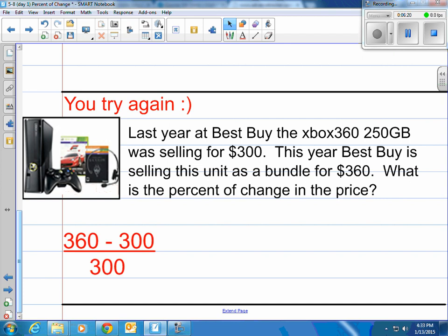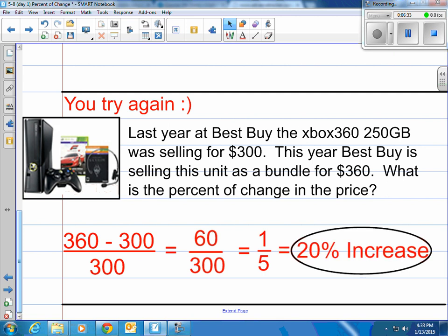So what do we start out with? We take 360 and subtract the 300, which gives us 60 over 300. And 60 over 300 is one-fifth. And one-fifth is 0.2 or 20%. And notice it actually went up from $300 to $360. So we call that an increase. That's a 20% increase right there. That is percent of change.